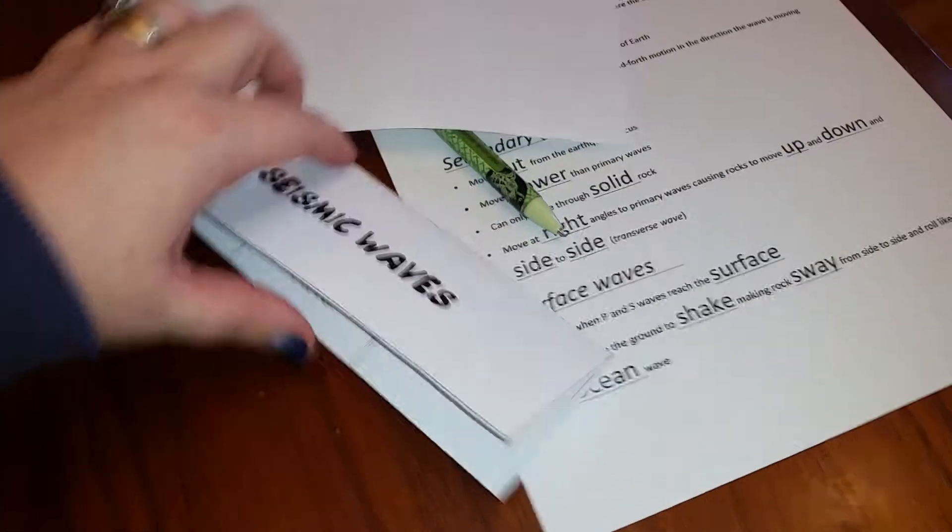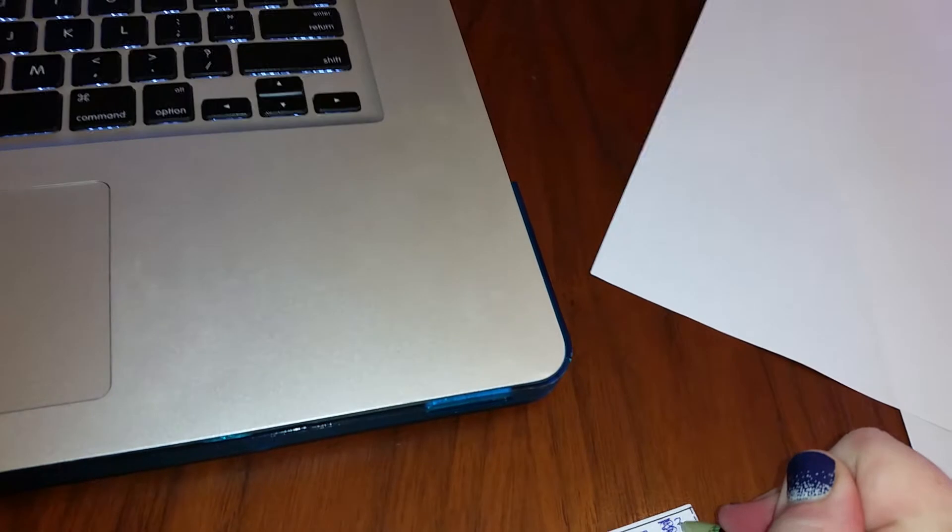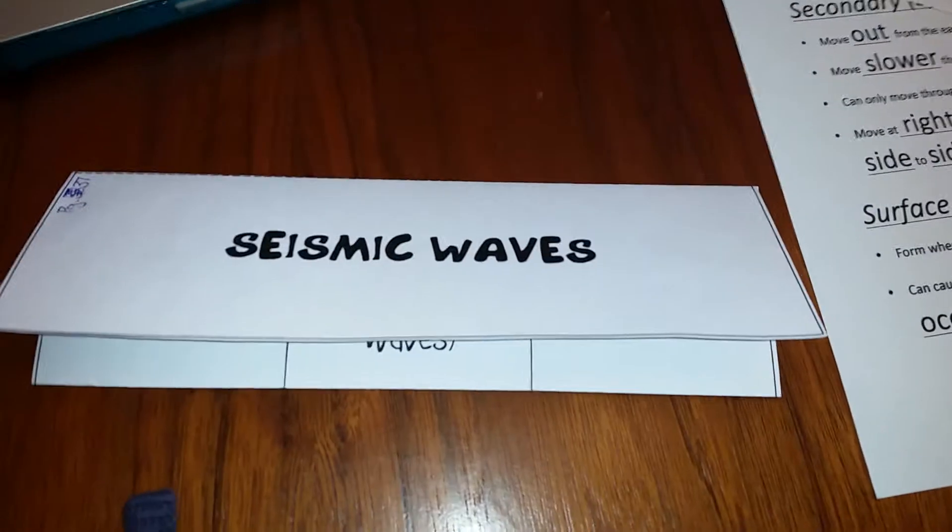Hey guys! Alright, today you're going to be making a seismic waves foldable that says 37 or 38—it should say 37. Baker's class, this is going to go on page 37 of your interactive student notebook just like the directions in canvas say.